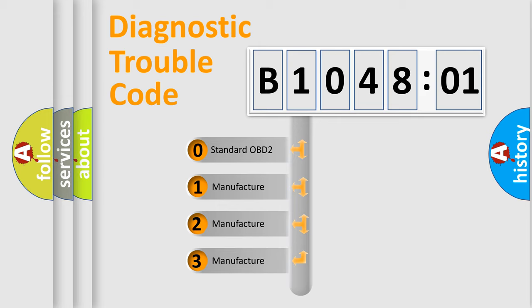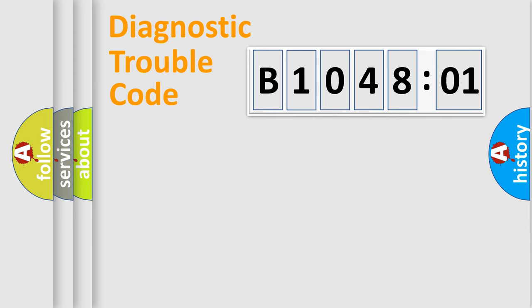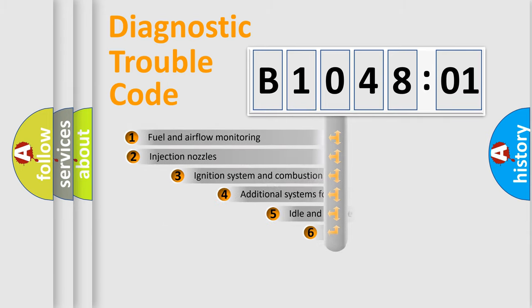If the second character is expressed as zero, it is a standardized error. In the case of numbers 1, 2, 3, it is a more prestigious expression of the car-specific error.